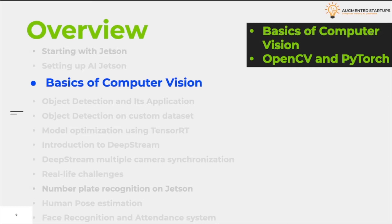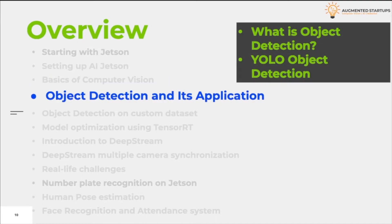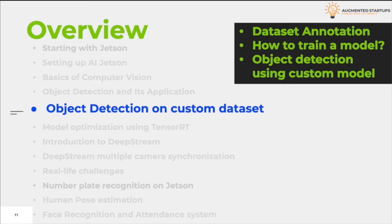After setting up our Jetson, we will try some basics of computer vision using OpenCV and some basic functions of the PyTorch library. After that we will move to the most interesting part of this module, which is object detection — its importance in computer vision and how we can do it using our own custom dataset. In this part we will be focusing on YOLO object detection.